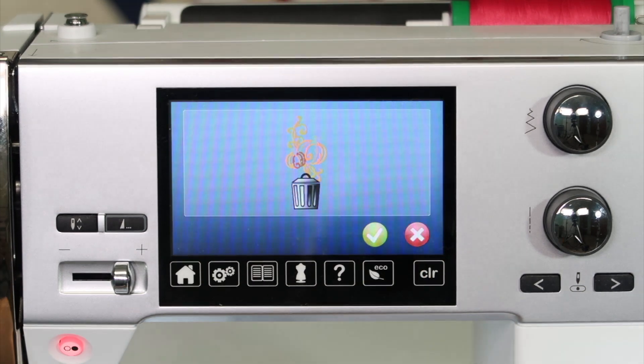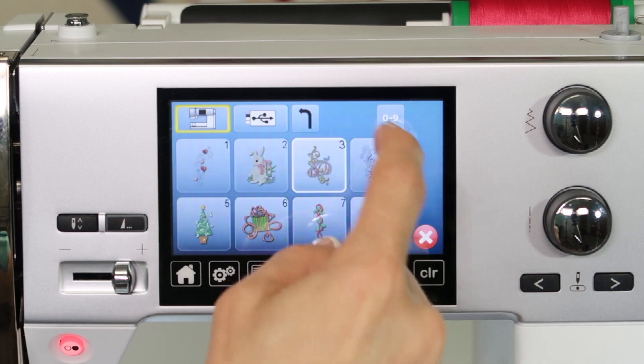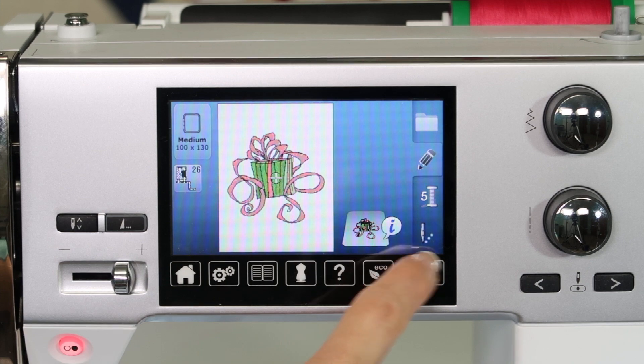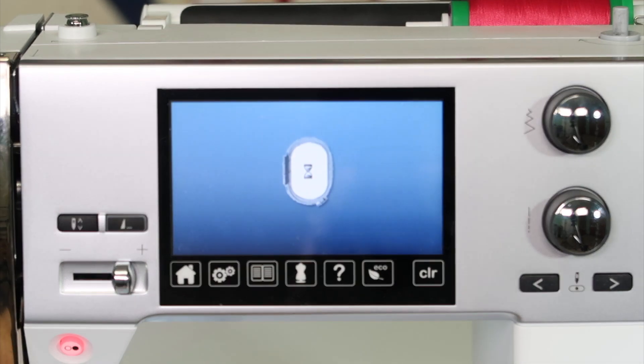Then the trash can would... Are you sure you want to do that? Sure. The design's gone, and you can go back and go get, for example, a new design and get ready to stitch. When you are ready to stitch, you can go ahead and touch the needle and thread option, and that will take you to the embroidery screen.